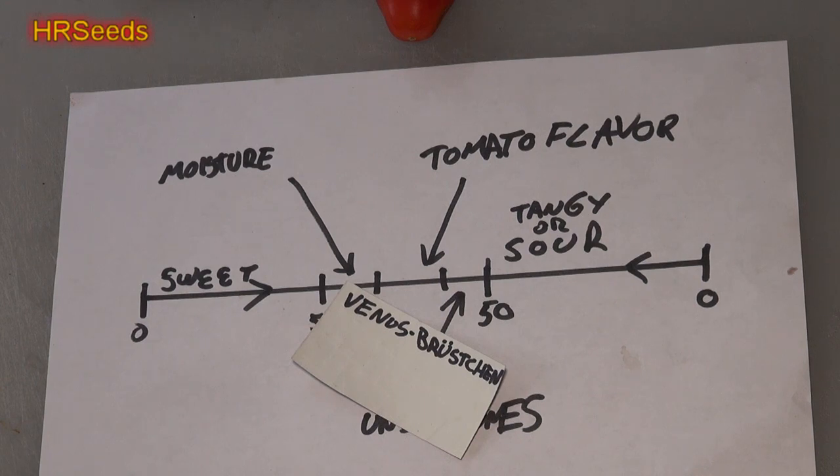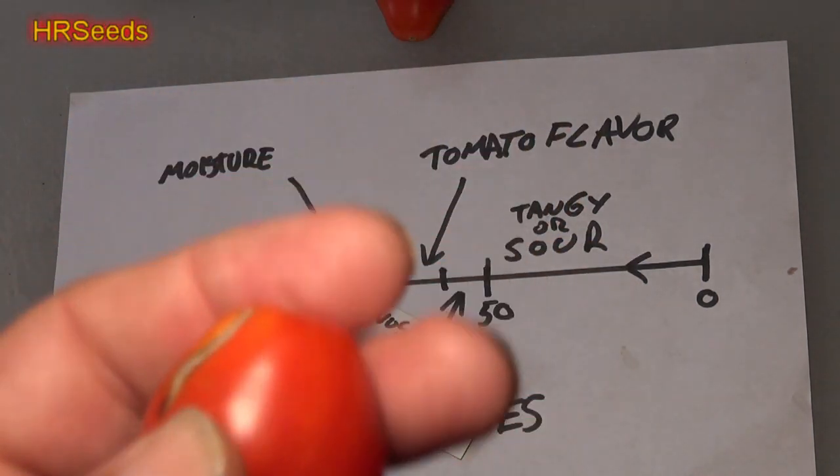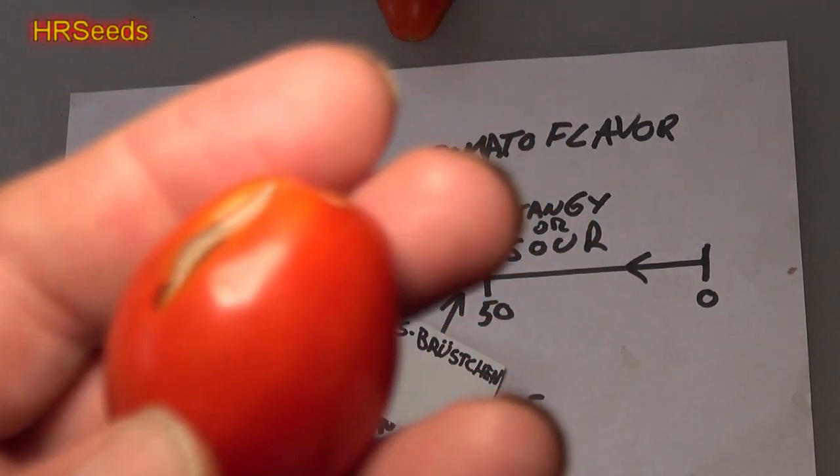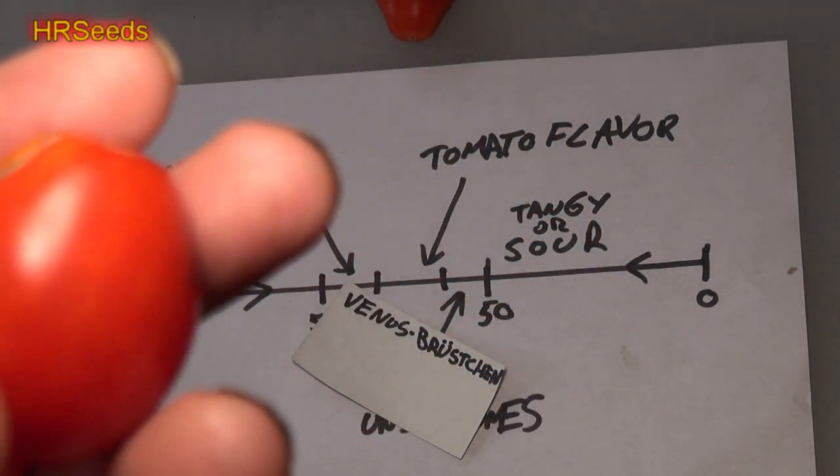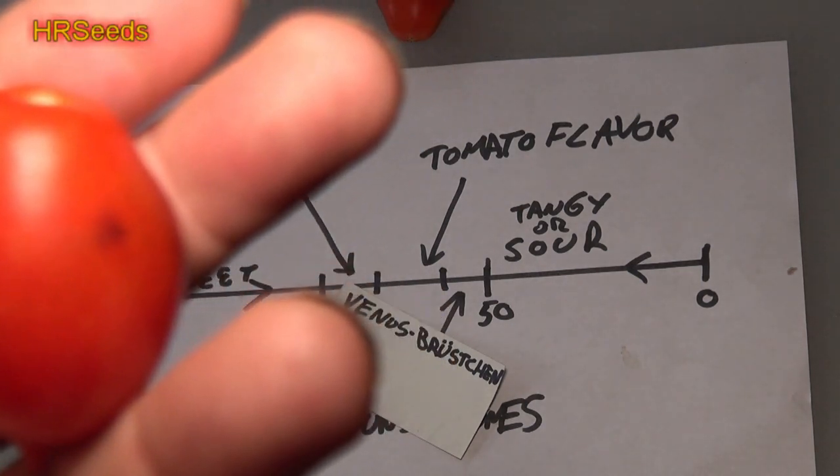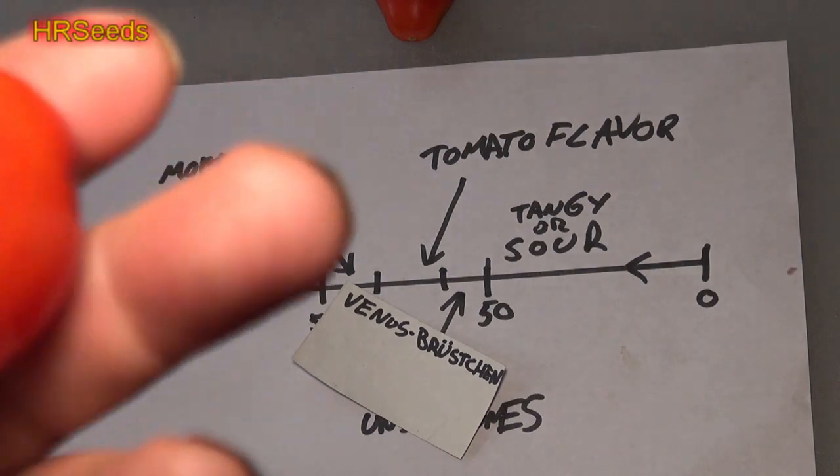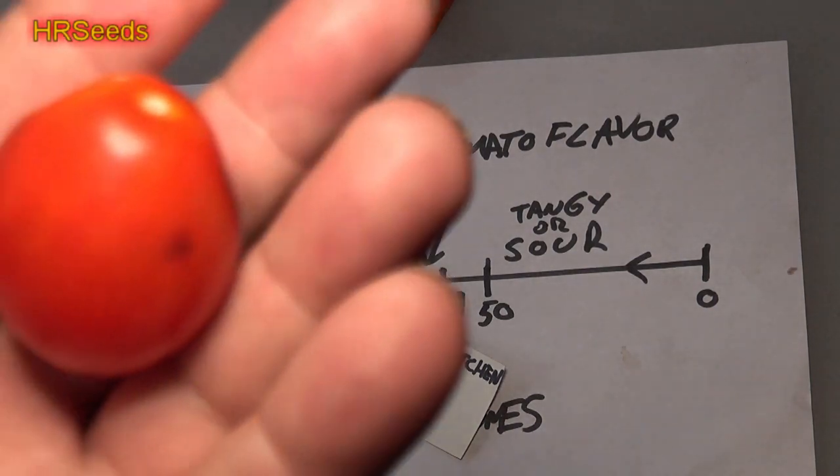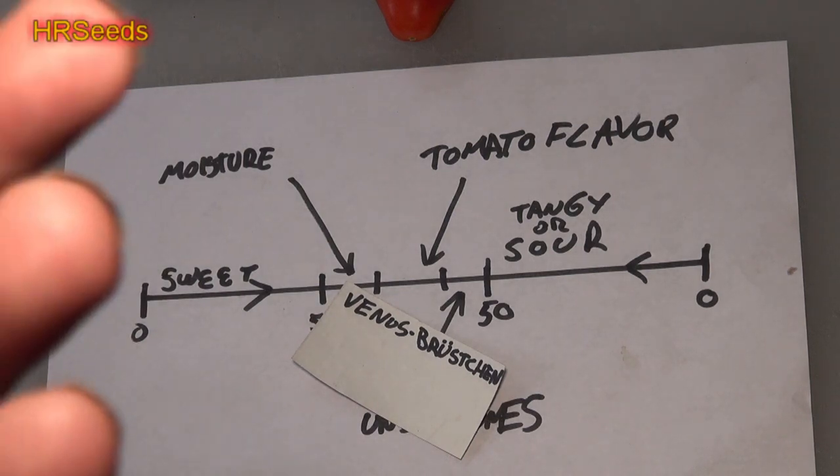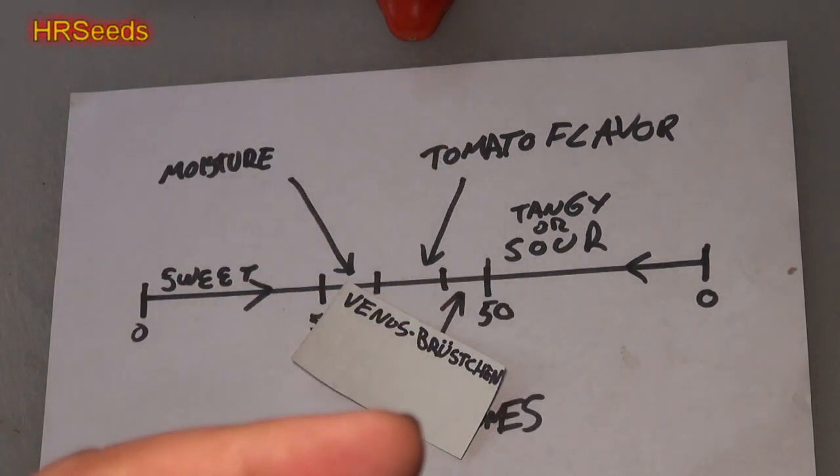I will also leave links to the seeds that'll be available for this variety in the description below. You got to give me a little bit of time to process the tomatoes as well as build the web page for it, and then you can click that link and be able to buy tomatoes there. So you got to give it a little time, a few days to a week, maybe two weeks from when you see this video. I'll have a page up and running, you'll be able to get seed for it. Alright, so that was it. That was your tomato review for the Venus Büstchen. Don't forget to like, share, and subscribe and I'll see you on the next one. Take care.